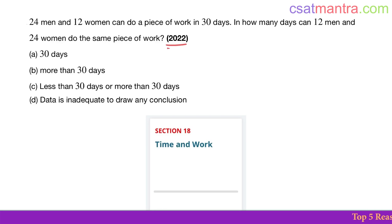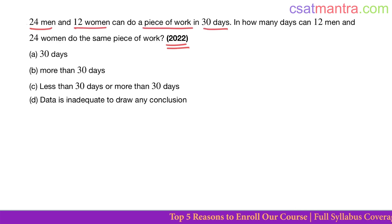This question was asked in 2022 based on time and work. 24 men and 12 women can do a piece of work in 30 days. In how many days can 12 men and 24 women do the same piece of work?